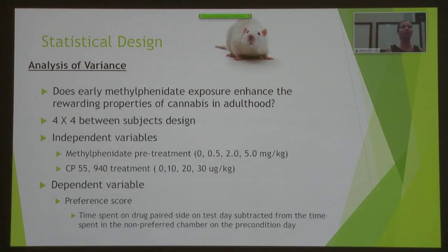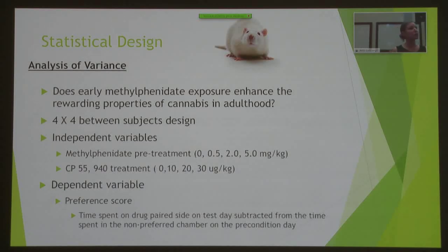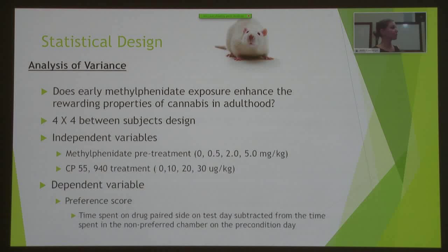To reiterate: we wanted to find out if early methylphenidate exposure enhances the rewarding properties of the cannabinoid agonist. Our independent variables are the methylphenidate pretreatment and the cannabinoid agonist treatment during CPP testing. Our dependent variable is a preference score — the time spent on the drug-paired side on testing day minus the time spent in that compartment on preconditioning day, to see if preference for that compartment increased.